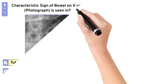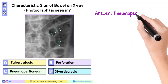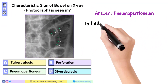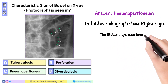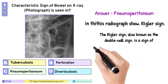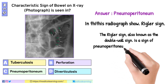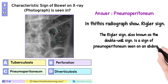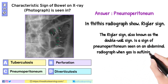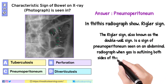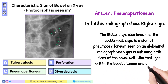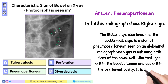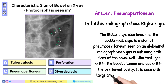In this question, the answer is pneumoperitoneum. This radiograph shows the Rigler sign, also known as the double wall sign. It is a sign of pneumoperitoneum seen on an abdominal radiograph when gas is outlining both sides of the bowel wall — gas within the bowel's lumen and gas within the peritoneal cavity. It is seen with large amounts of pneumoperitoneum.